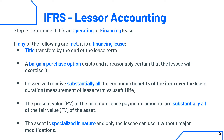Now let's talk about lessor accounting for IFRS. The first step is to determine if you have an operating lease or a financing lease, because the accounting treatments differ. To be a financing lease, you need to meet any one of the criteria. The first is whether there is a title transfer at the end of the lease. The second is whether it is reasonably certain a bargain purchase option will be used. Third, whether the lessee receives substantially all the economic benefits over the lease duration — determined by comparing the lease term to the total useful life.